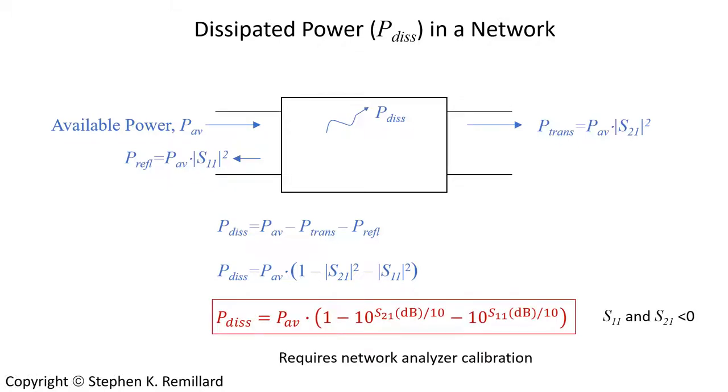Modulus squared of a scattering parameter is determined from a network analyzer measurement by taking those decibels, dividing them by 10, and raising them to the power of 10. Now you can ask your network analyzer to give you the modulus of the S-parameters and square it yourself, or you just use this expression. Just remember S11 and S22 in this equation have to be negative numbers. S21 is the S-parameter below zero decibels, as is S11.